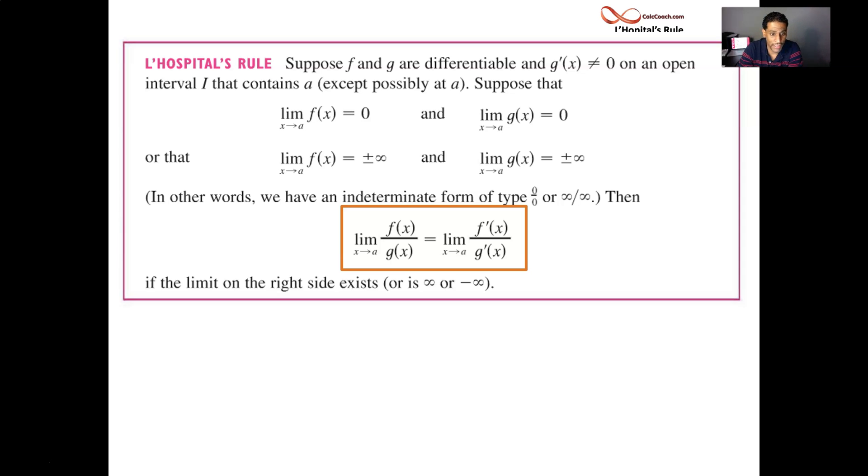L'Hôpital's Rule says that if the limit that you're trading in for exists, even if it's infinity or negative infinity, if it exists, then you can do this. And so it's not a quotient rule. Please don't get it confused. It is the numerator derivative divided by the denominator derivative.